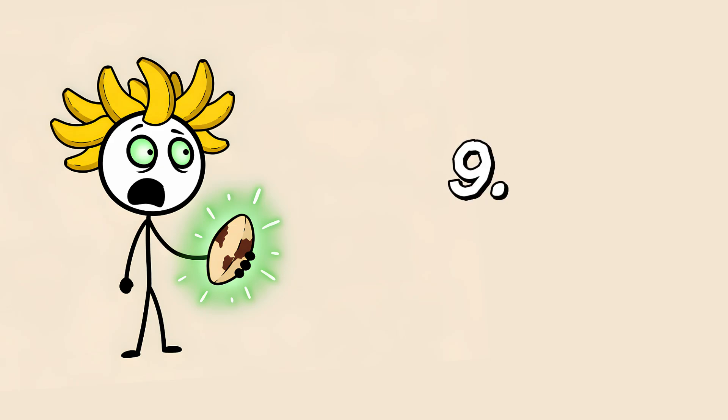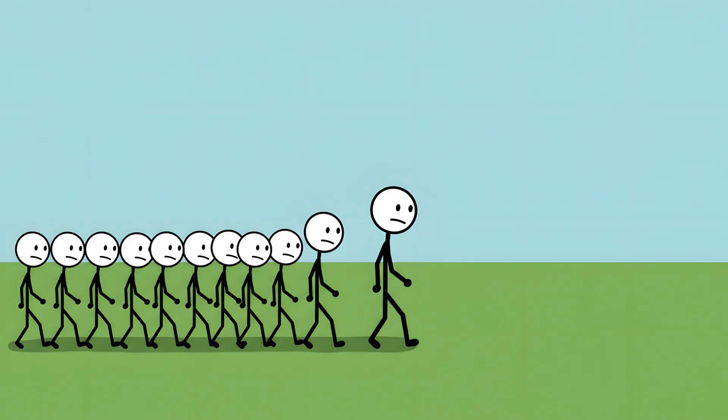Let's get weird into it. Number 9. The Ant Death Spiral. Imagine you're an army ant. Life is simple. You have two jobs: Follow the ant in front of you, and don't die.